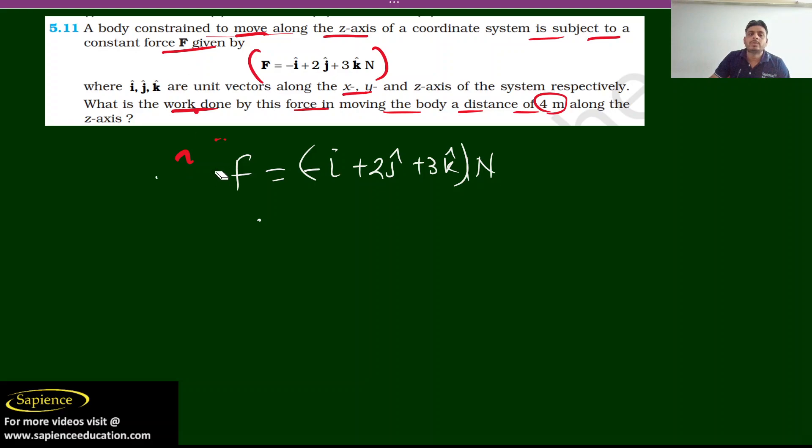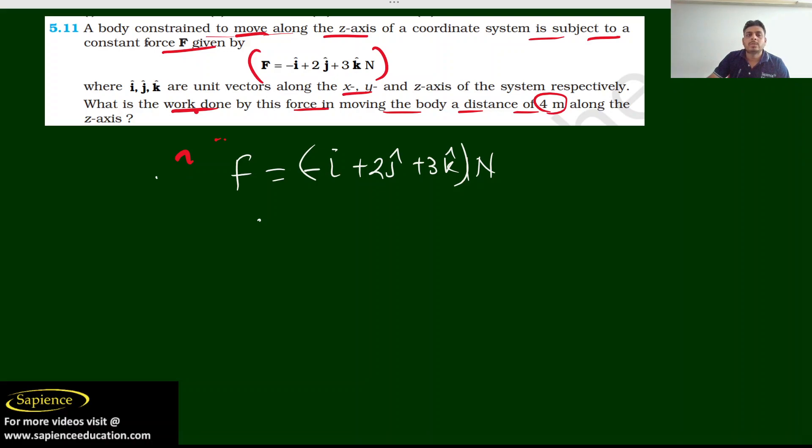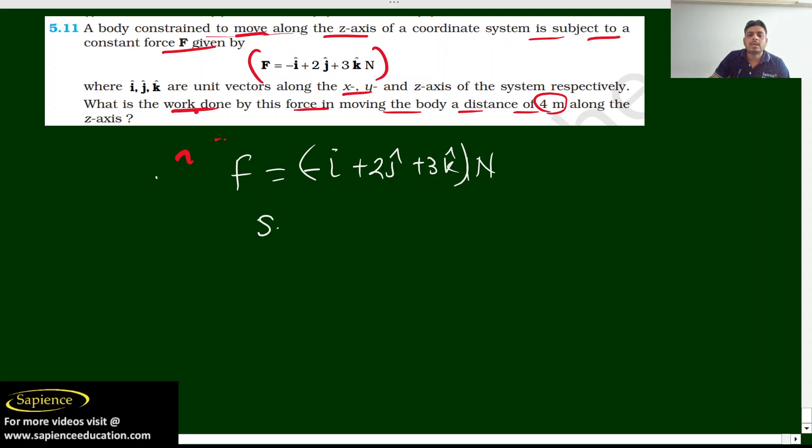So displacement will be s. In the question they are telling that displacement is 4 meters along z-axis, so that will be 4k only. Where is that ij caps? Since they are telling it is moving in z direction, so we have got displacement s. Work done is equal to